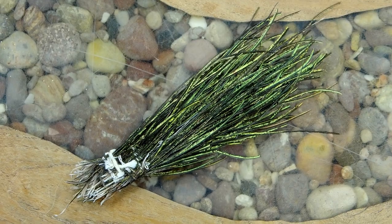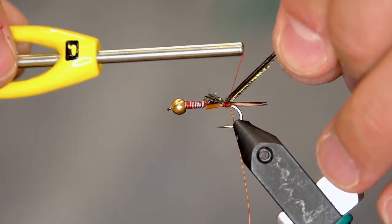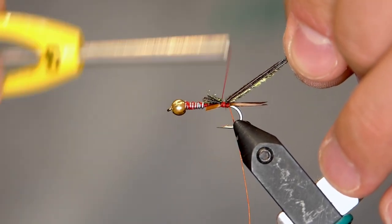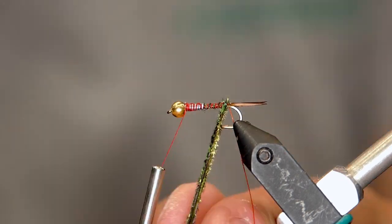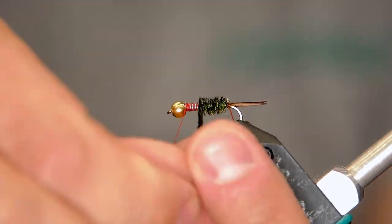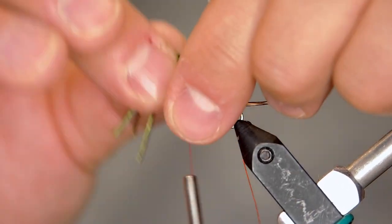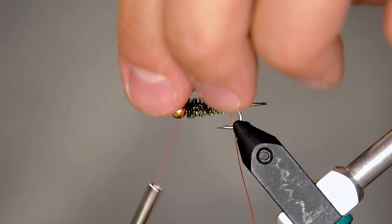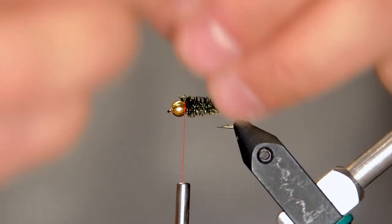Now I'm going to put in three pieces of peacock hurl and this is what we'll make our body out of. So again, just tying that right in, we're going to advance our thread up to the bead and now I'm just going to palmer that peacock hurl up to the top to make the body and notice how those lead wraps make it a little bit thicker and more natural looking as it approaches the bead.